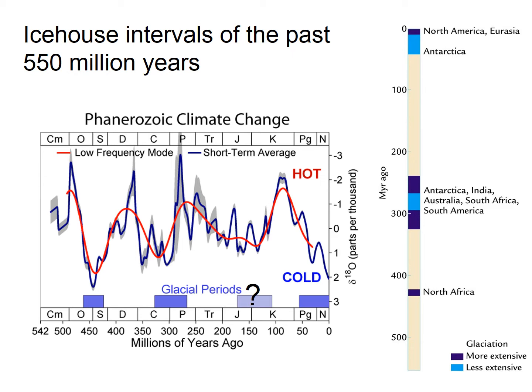Quite often geologists plot this the other way around because they want the numbers to increase — that's the way Excel plots numbers. But this is the correct physical way of measuring time. What we can see is that throughout geological time we've gone through cold periods. We're in a cold period at the moment — we've got ice sheets at the poles. Go back in geological time and there are some places where it was a lot warmer, like the end of the Cretaceous. And then there were colder periods, warmer periods — cycles of cold and warm.